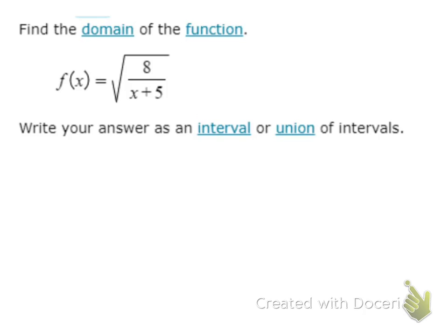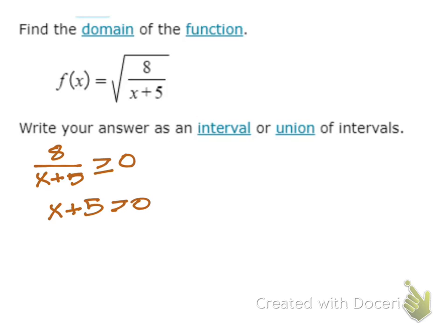Last one. Same situation: we have the big radical, and we're looking at 8 over x plus 5 being greater than or equal to 0. This happens when x plus 5 is greater than 0, because the 8 is positive. Anything that changes the sign happens in x plus 5, and x plus 5 has to be strictly greater than — not greater than or equal to — to prevent a 0 in the denominator. So x would be greater than negative 5, and in interval notation that is negative 5 to infinity.